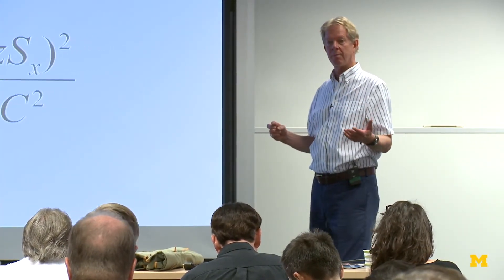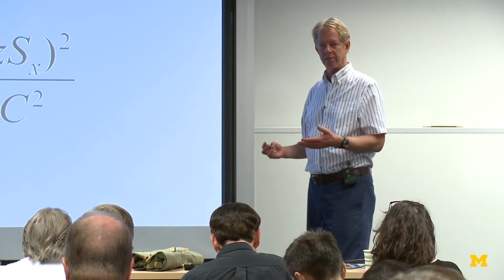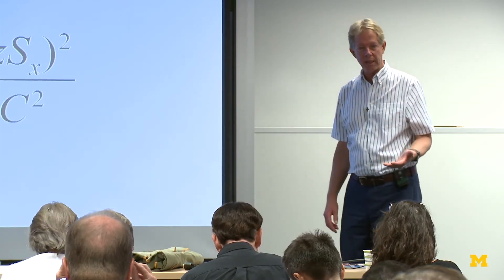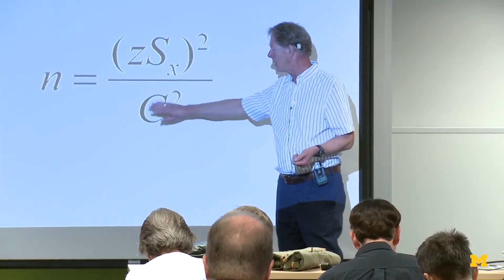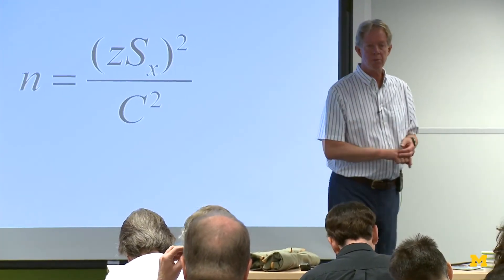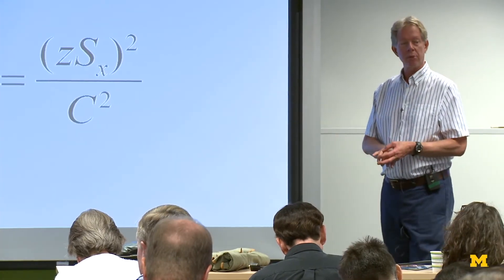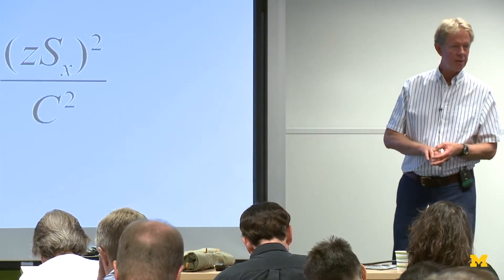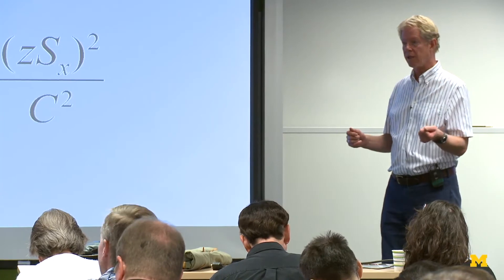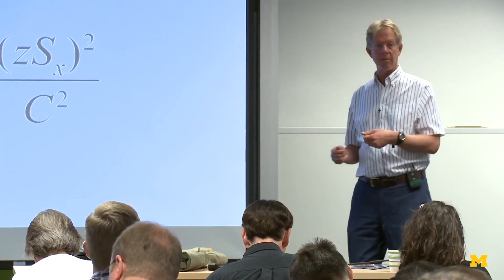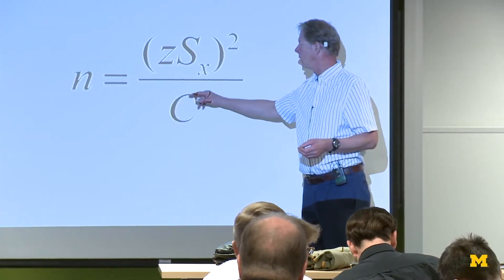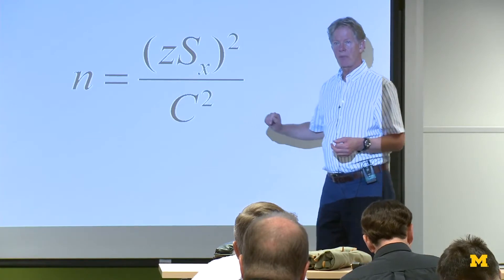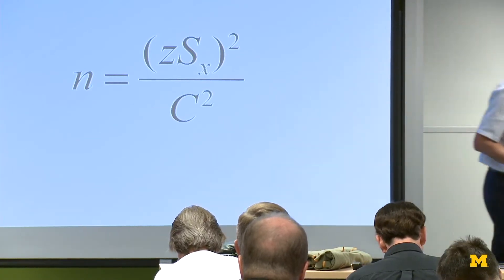The more confident we want to be, the more people we have to measure — that's again on the top of the equation. And c refers to the precision. How precisely do we need to know the answer? Do we need to know this plus or minus one millimeter, or plus or minus eight millimeters? The larger the number for c down here, the smaller the n. So let's work through an example.